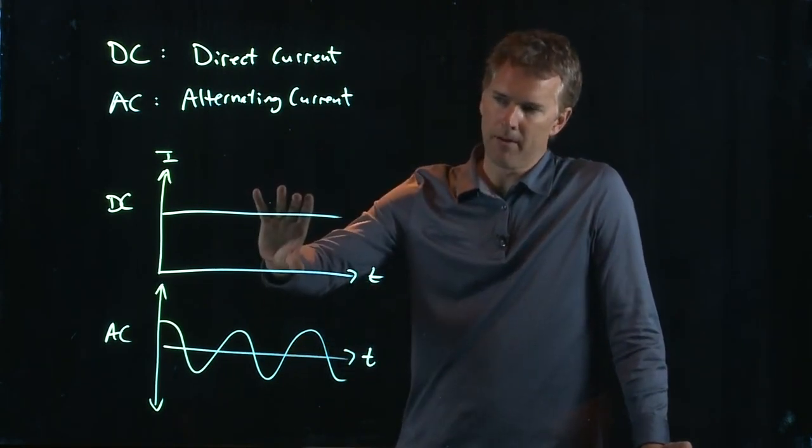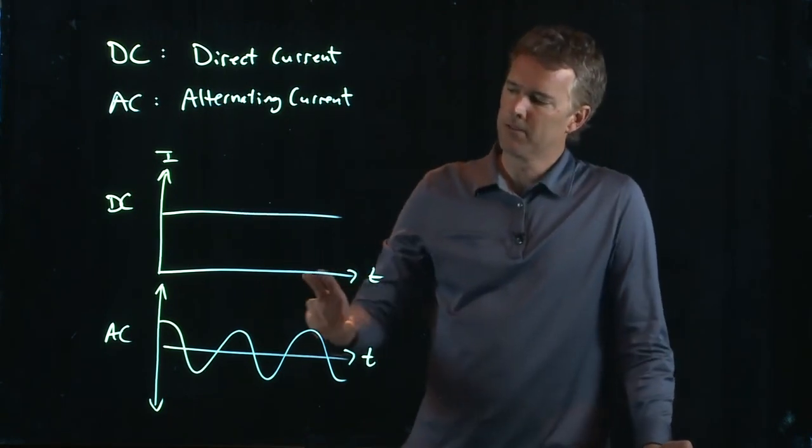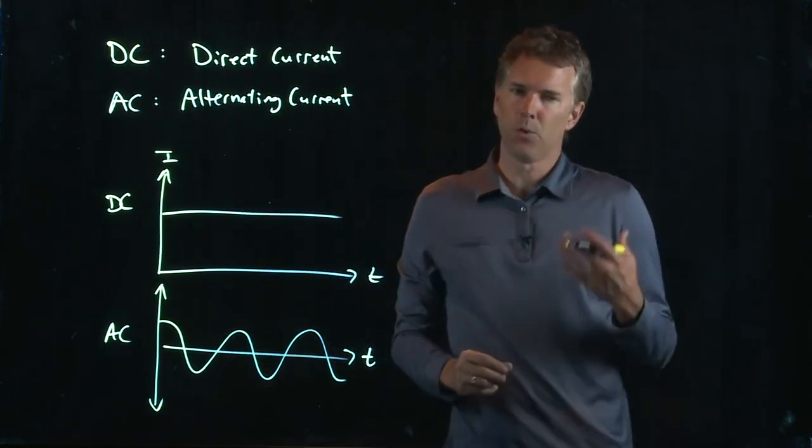Okay, so when you fire up your AA battery, you get 1.5 volts, and that's it. But when you plug something into the wall, you get 120 volts AC.